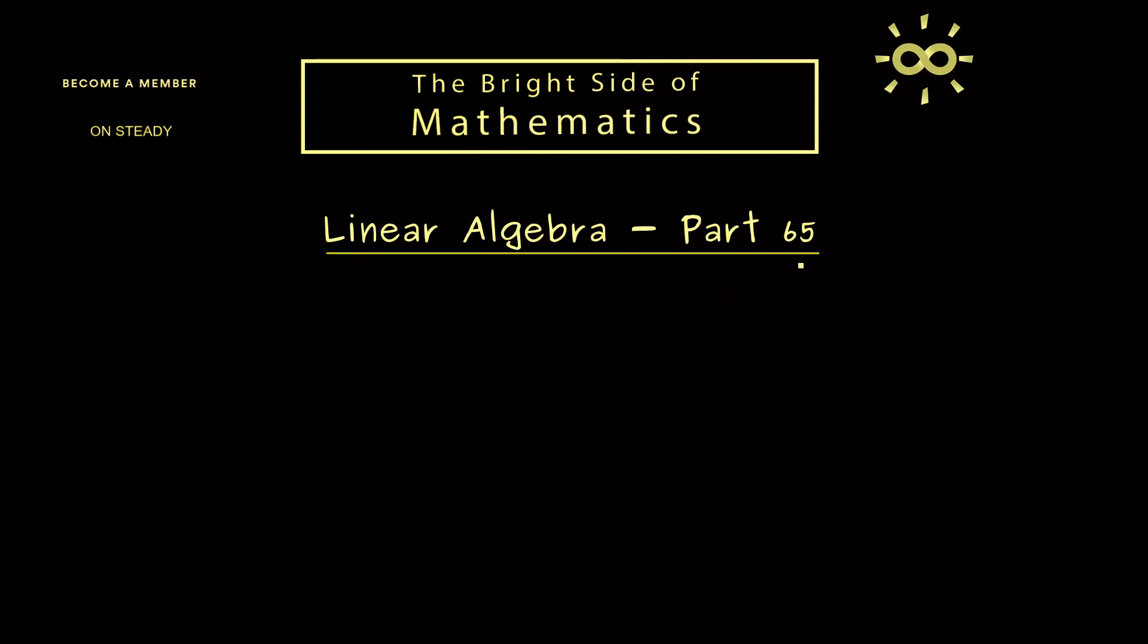And in today's part 65 we continue the discussion from the last video where we talked about diagonalization. More precisely, today we will say what we need such that a given matrix is diagonalizable.